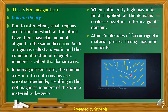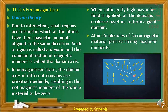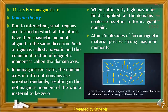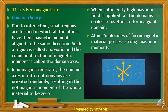In the non-magnetic state, the domains are randomly oriented and the magnetic moments cancel each other out, resulting in the substance's net magnetic moment being zero.